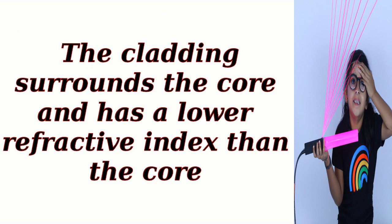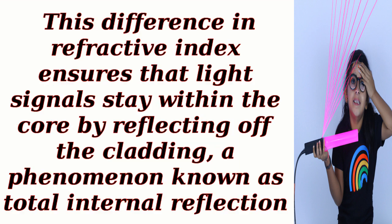The cladding surrounds the core and has a lower refractive index than the core. This difference in refractive index ensures that light signals stay within the core by reflecting off the cladding, a phenomenon known as total internal reflection.